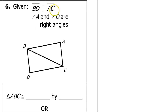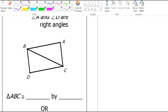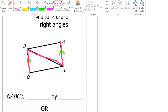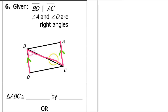In problem number six, we have parallel sides again. Parallel sides lead to congruent angles, not congruent segments. We're told that BD is parallel to AC — these arrows mean the sides are parallel, it does not mean they are congruent. But because they are parallel, I'm going to use them to draw the letter Z — or more like an N since it's on its side. The corners of this Z or N are alternate interior angles, and they will be congruent.